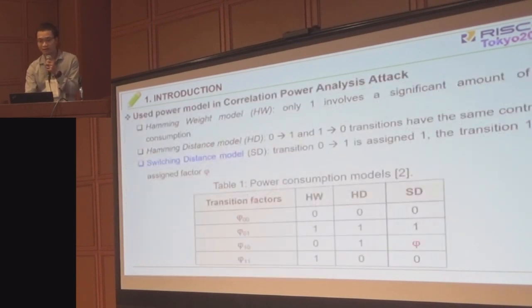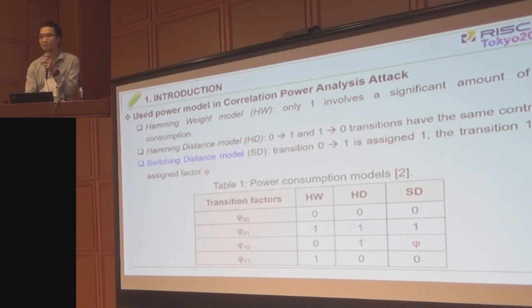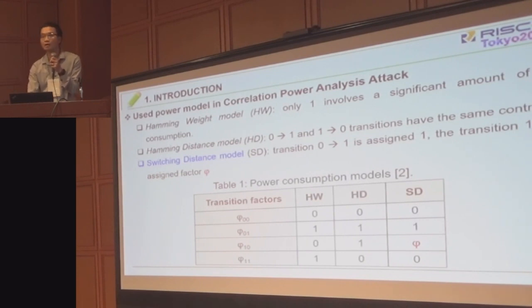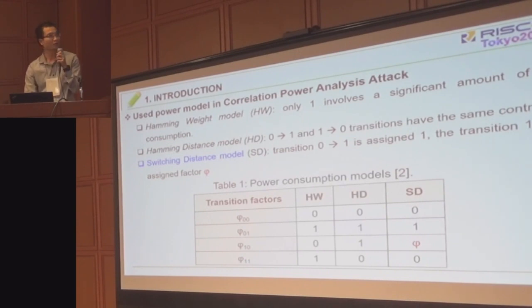In CPA, the attacker uses a power model to predict the power consumption of the target device. The quality of the model has an important impact on the effectiveness of these attacks. In fact, there are three basic power models: Hamming weight, Hamming distance, and switching distance models.